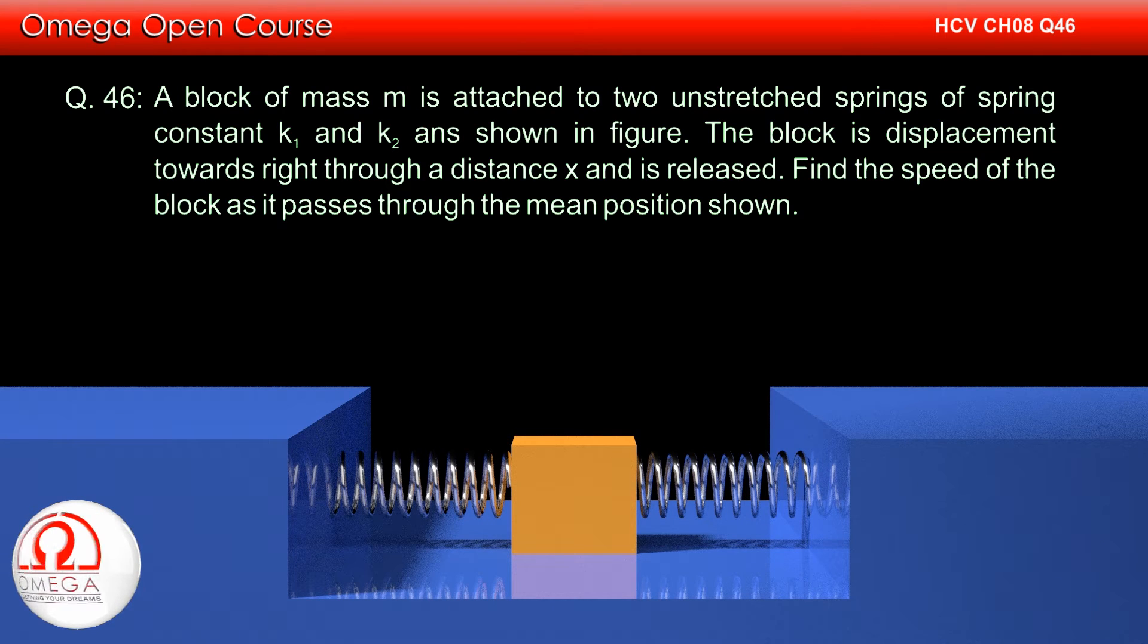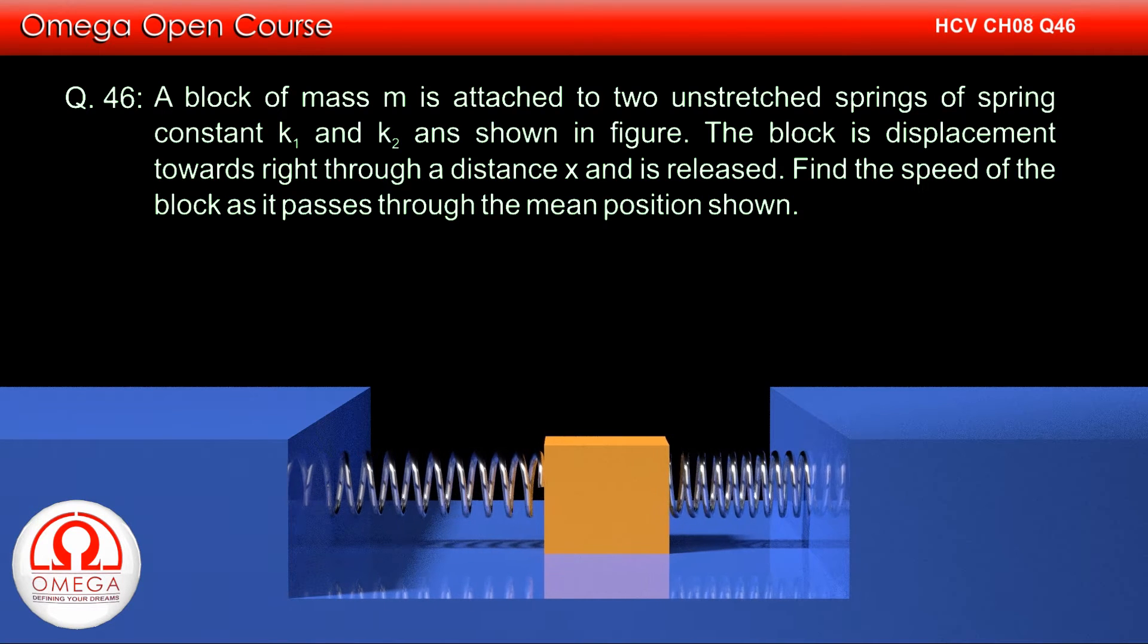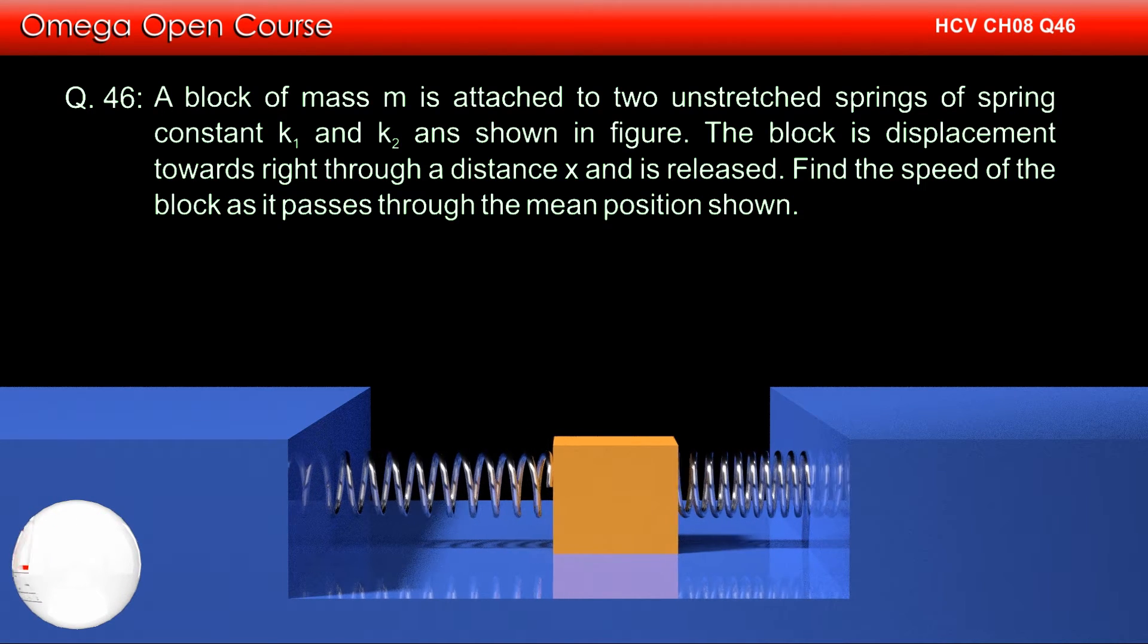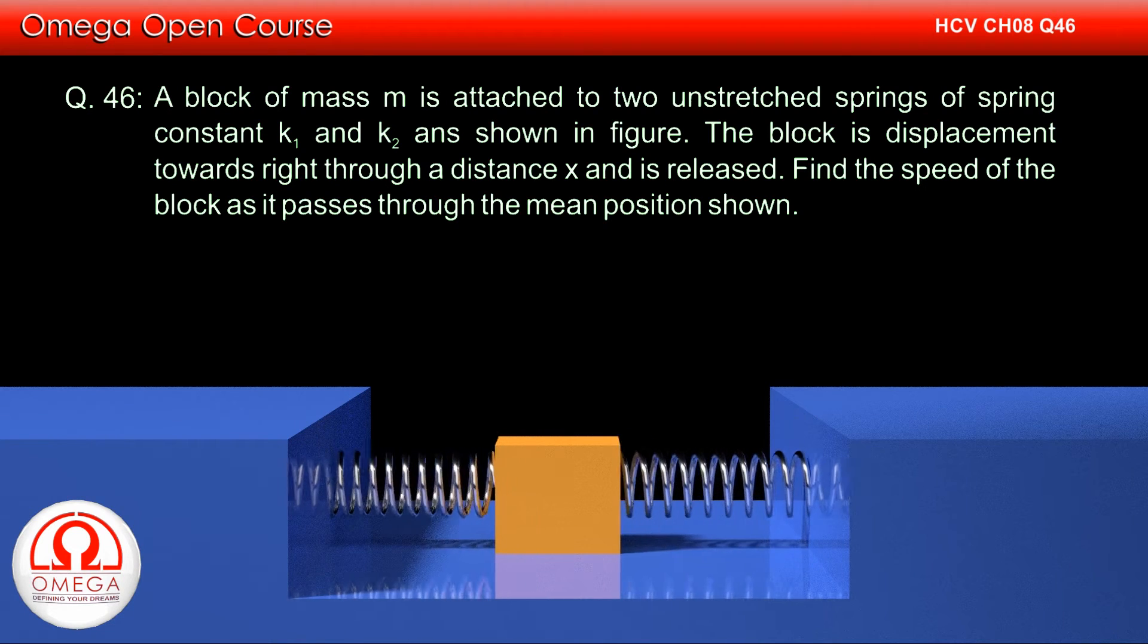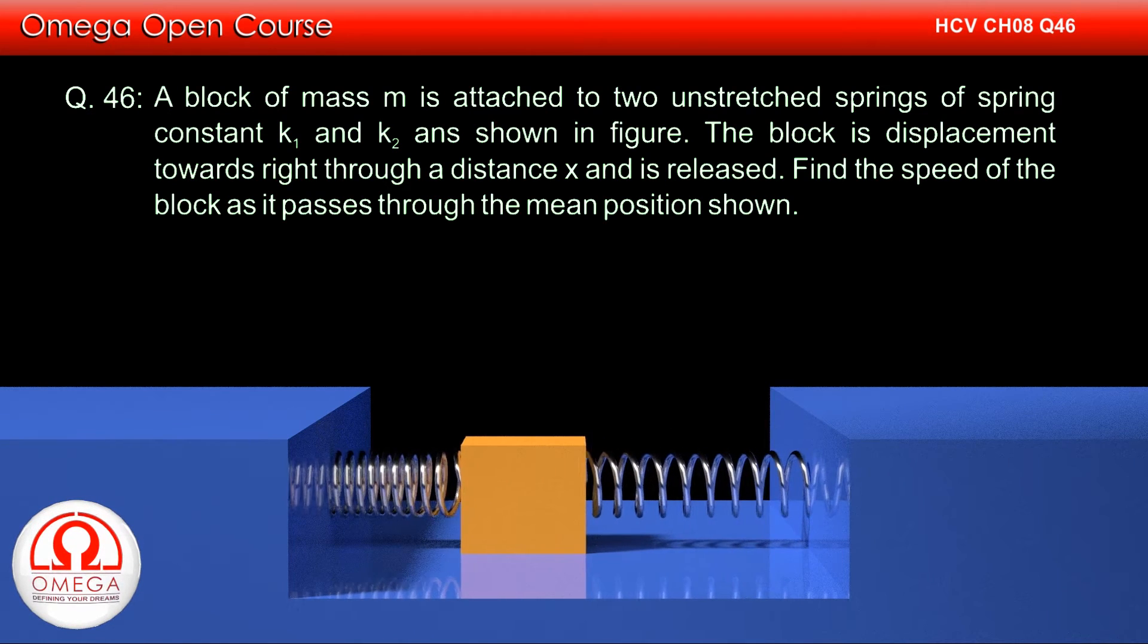A block of mass M is attached to two unstretched springs of spring constant K1 and K2 as shown below. The block is displaced towards right through a distance x and is released. Find the speed of the block as it passes through the mean position.